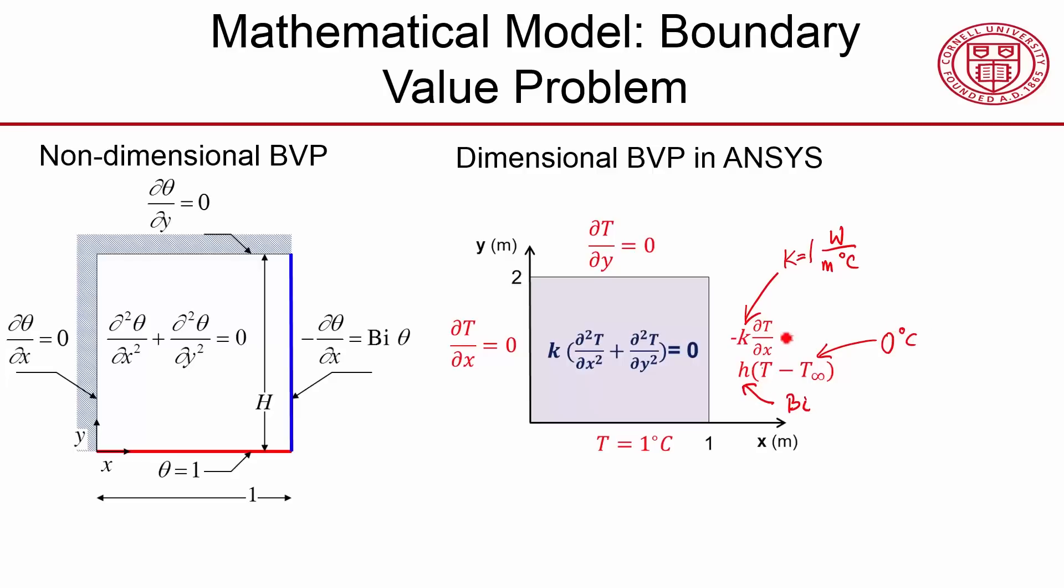When I do that, this boundary condition looks exactly the same as that, and then this dimensional boundary value problem looks exactly like the non-dimensional boundary value problem. ANSYS will report the temperature in degrees Celsius, but I can interpret that as a non-dimensional temperature θ. So T and θ will be the same if we do that - that's the trick to solve that non-dimensional problem in ANSYS.